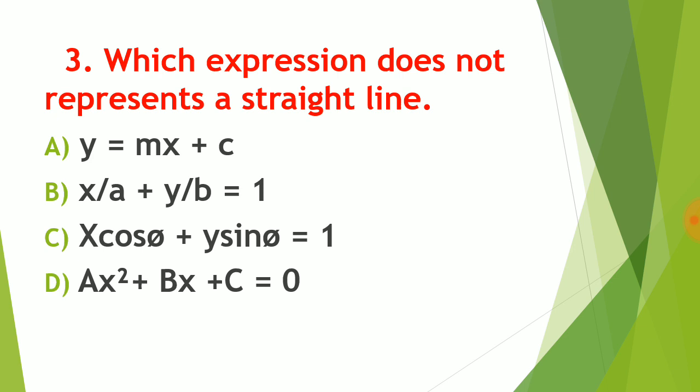Question number three: which expression does not represent a straight line? We have three standard forms of a straight line. First, y = mx + c, called the slope-intercept form. Second, x/a + y/b = 1, called the double intercept form. Third, x·cos α + y·sin α = 1, called the normal or perpendicular form. And ax² + bx + c = 0 is not a straight line — if x contains a power greater than 1, it is not a straight line. So the correct answer for question number three is option D: ax² + bx + c does not represent a straight line. All other options are standard forms of a straight line.